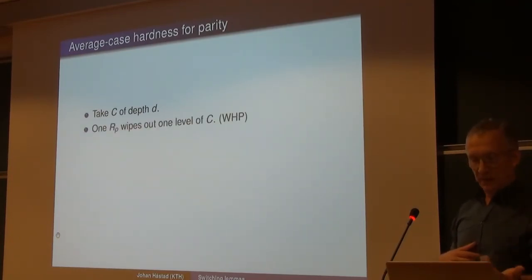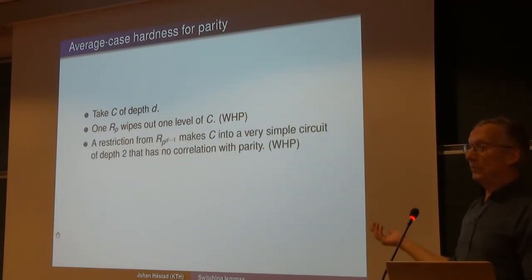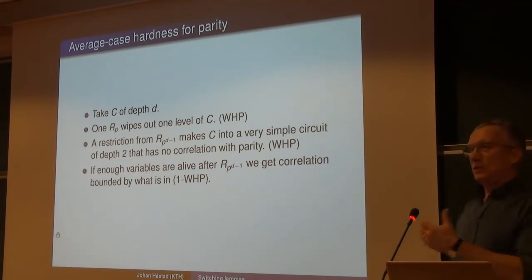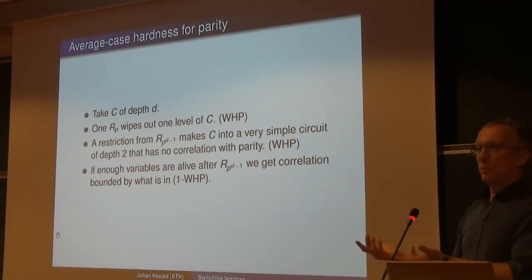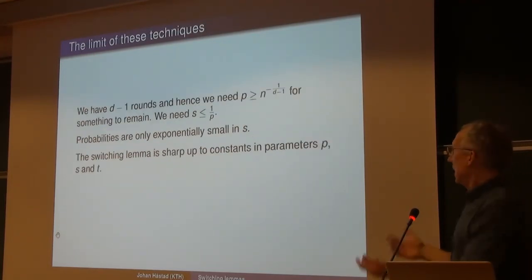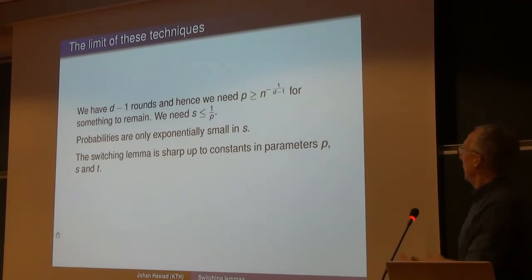For the average case: you have a circuit of depth D, apply R_p with the correct parameter, which wipes out one level with high probability. After doing this D-1 times you get a very simple circuit with no correlation to parity. Completing with more random bits produces a uniformly random input, so the correlation is bounded by the failure probabilities in each step. And the parameters I picked are essentially the only valid choice — you can't make p smaller because nothing would survive D-1 rounds.